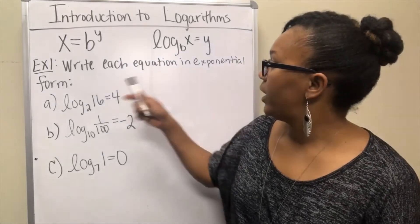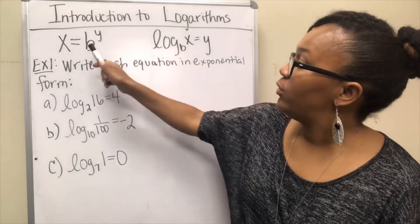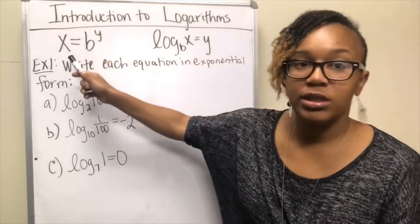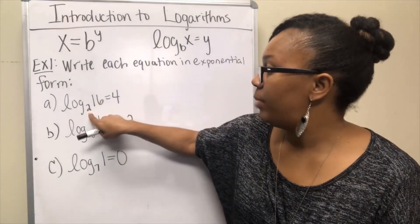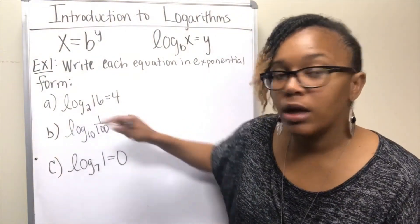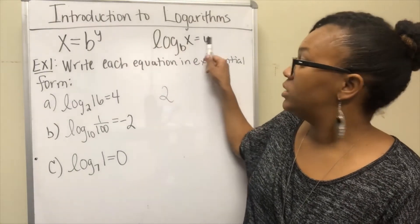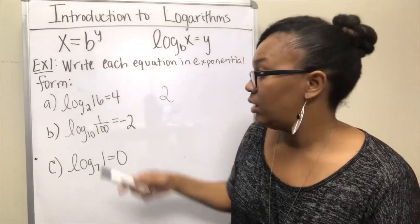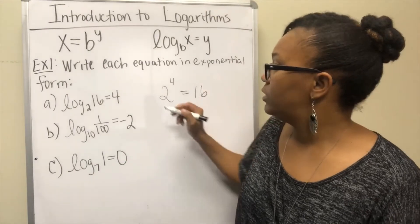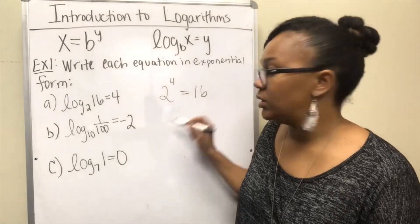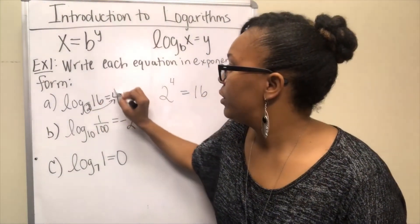For this first example, we want to write each of these equations in exponential form — all of these are written in logarithmic form. When we write this in exponential form, we first need to know what is the base, which is what's written low as a subscript, which is 2. Then we need to know the exponent, which is 4 — that's on the other side of the equal sign opposite the log. So this would be equivalent to 2 to the 4 equals 16.